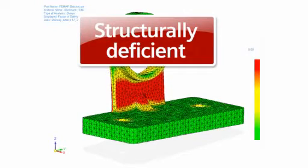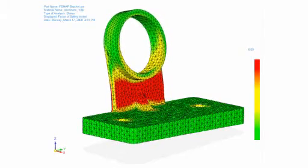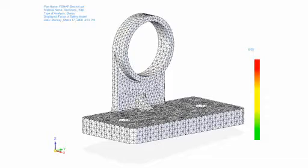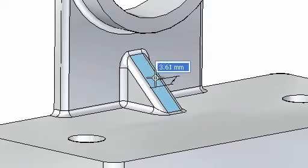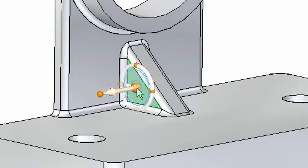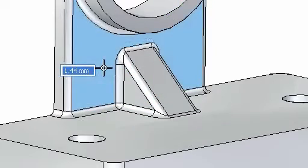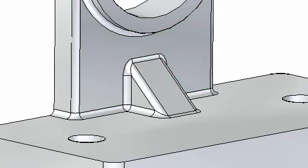How many times have you had to prove someone else's work without the benefit of knowing how it was designed? Here an analyst finds a structurally deficient part as identified by the massive red areas. With synchronous technology, anyone can make complex modifications without needing to know how the model was created. Making the rib taller will strengthen the part. Throughout these changes, blends are maintained and key features such as the rib stay symmetric. Remember, the analyst had no idea of how the model was built, but could make the desired edits in a natural, productive manner.